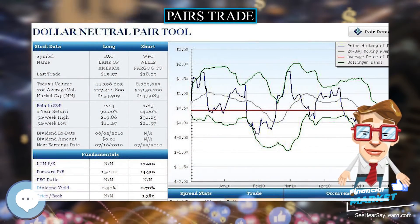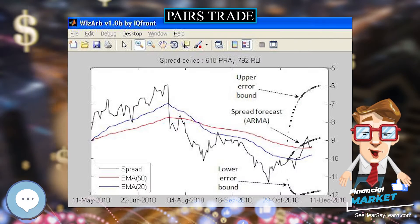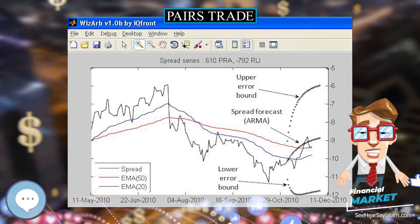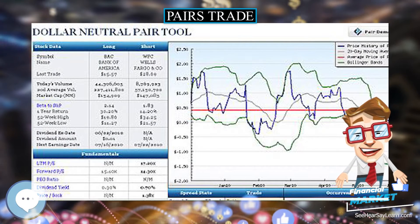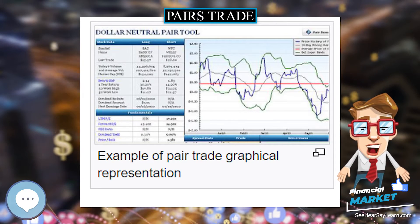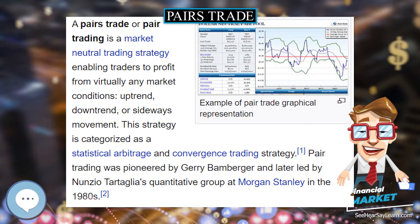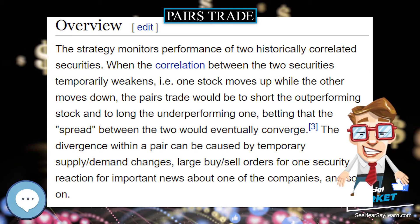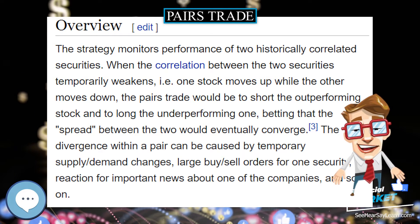Pairs trade. A pairs trade, or pair trading, is a market-neutral trading strategy enabling traders to profit from virtually any market conditions: uptrend, downtrend, or sideways movement. This strategy is categorized as a statistical arbitrage and convergence trading strategy. Pair trading was pioneered by Jerry Bamberger and later led by Nunzio Tartaglia's quantitative group at Morgan Stanley in the 1980s.